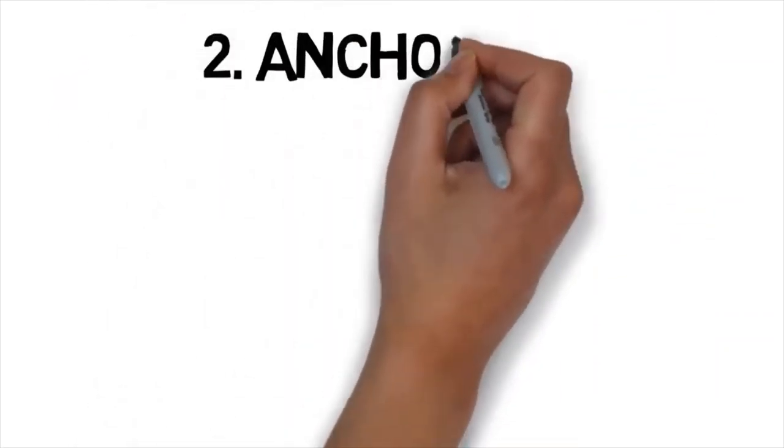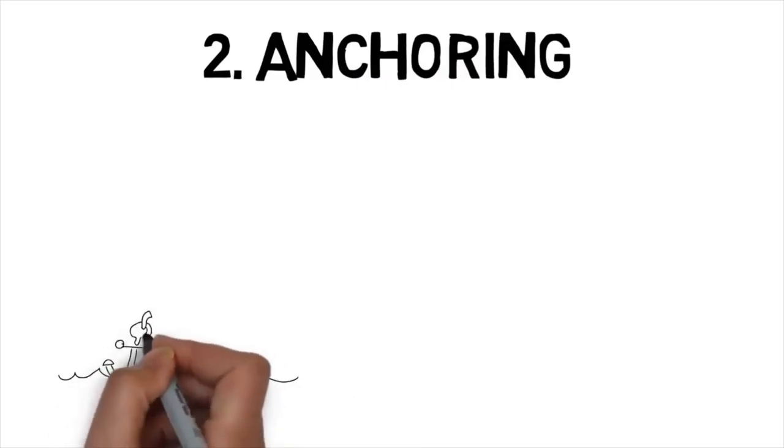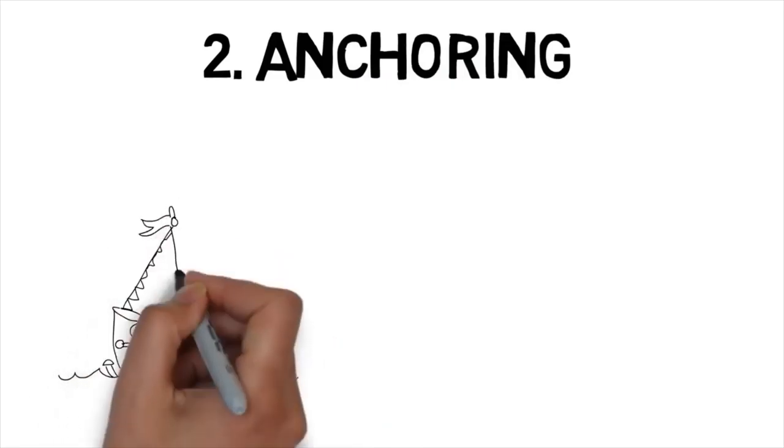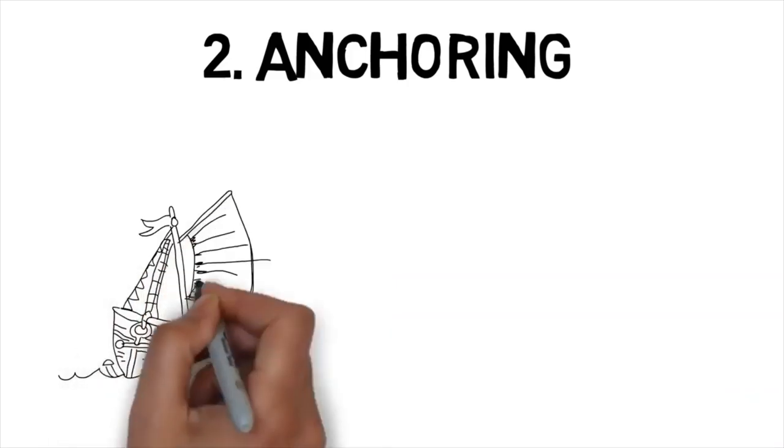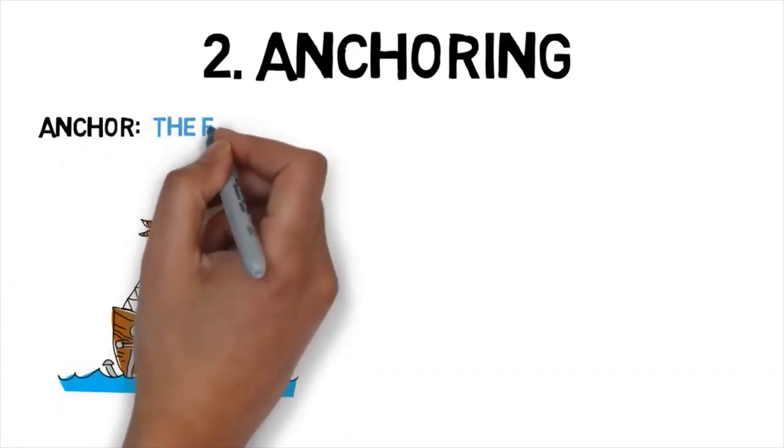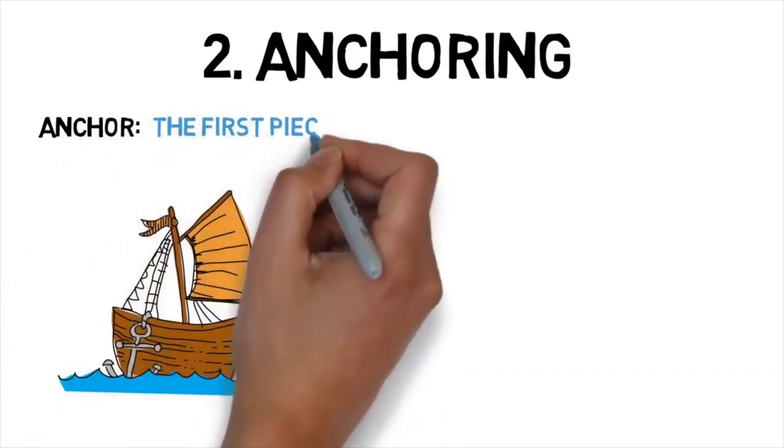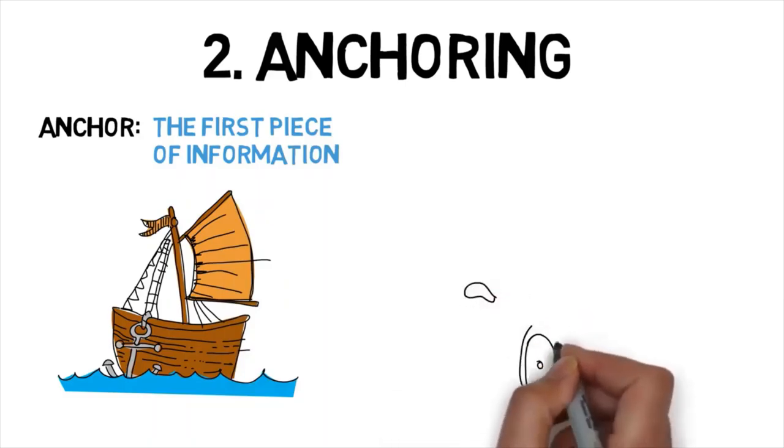Number 2. Anchoring. When making decisions, people make a lot of subconscious mistakes. One of those mistakes is known in the psychology world as anchoring. This means that people have a tendency to rely too much on the first piece of information that they have. This first piece of information is then called the anchor because it shapes the range of thinking going forward. Now, that might be a little bit confusing. So, let's consider a great example.